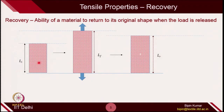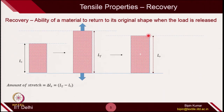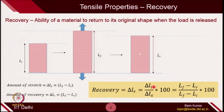The amount of deformation given to the fabric is L-final minus L-initial (delta L stretch). The amount of recovery is L-final minus L-r (delta L-r), which is the deformed length minus the recovered length. Taking the ratio of these two quantities gives recovery as a percentage. The recovery percentage for knitted fabric can range from 50 to 100, depending on material type, stitch type, and other key variables related to fabric behavior.